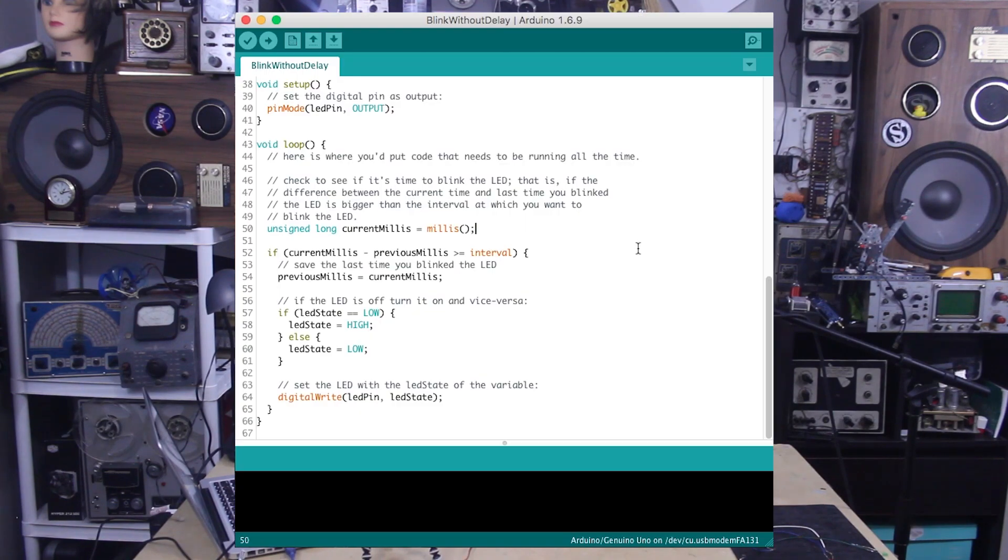This will help us determine if the difference between current time and previous time has passed 1000 milliseconds. To do so, we say: if current time minus the previous time the LED blinked is greater than or equal to our assigned interval of 1000 milliseconds, store the time of the most recent blink in previous millis.